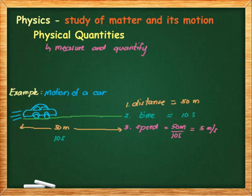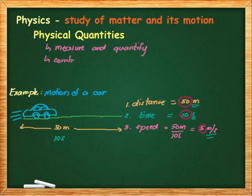Notice how we express the values of these physical quantities. You always have numbers: for distance we have 50, for time we have 10, for speed we have 5. And beside those numbers we have units — m for meters, s for seconds, and m/s for meters per second. That means physical quantities are expressed as a combination of a number and a unit. Most students forget about the unit, so please never forget to write the unit when expressing physical quantities.